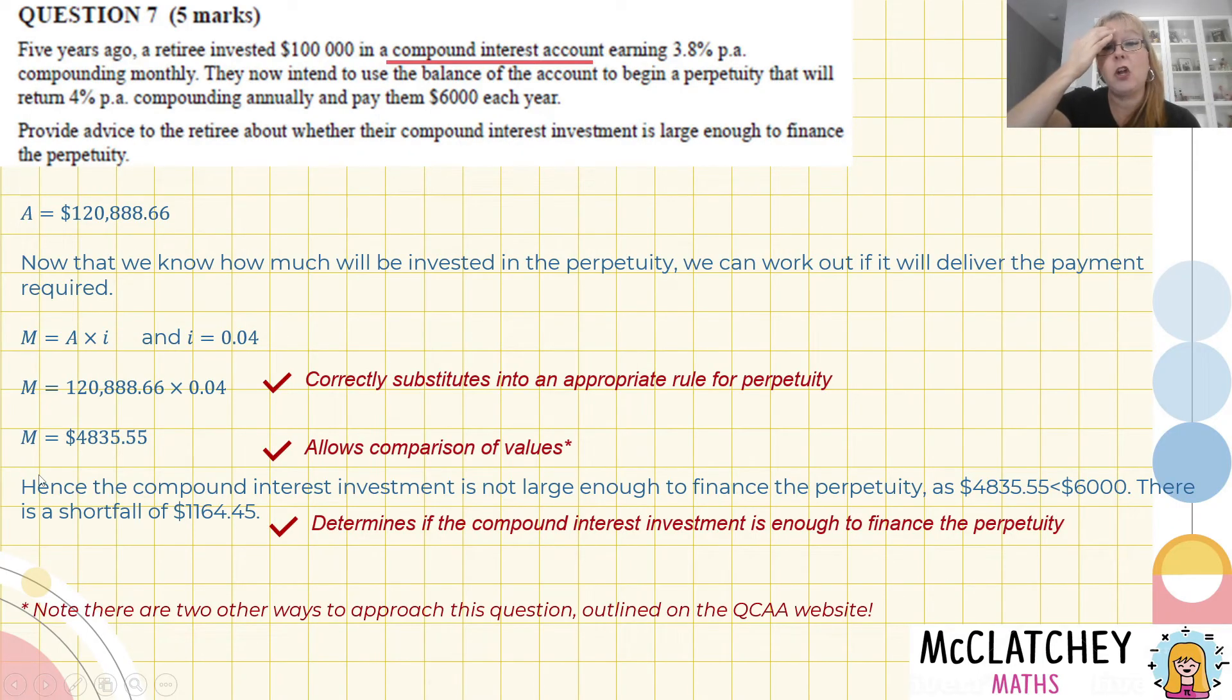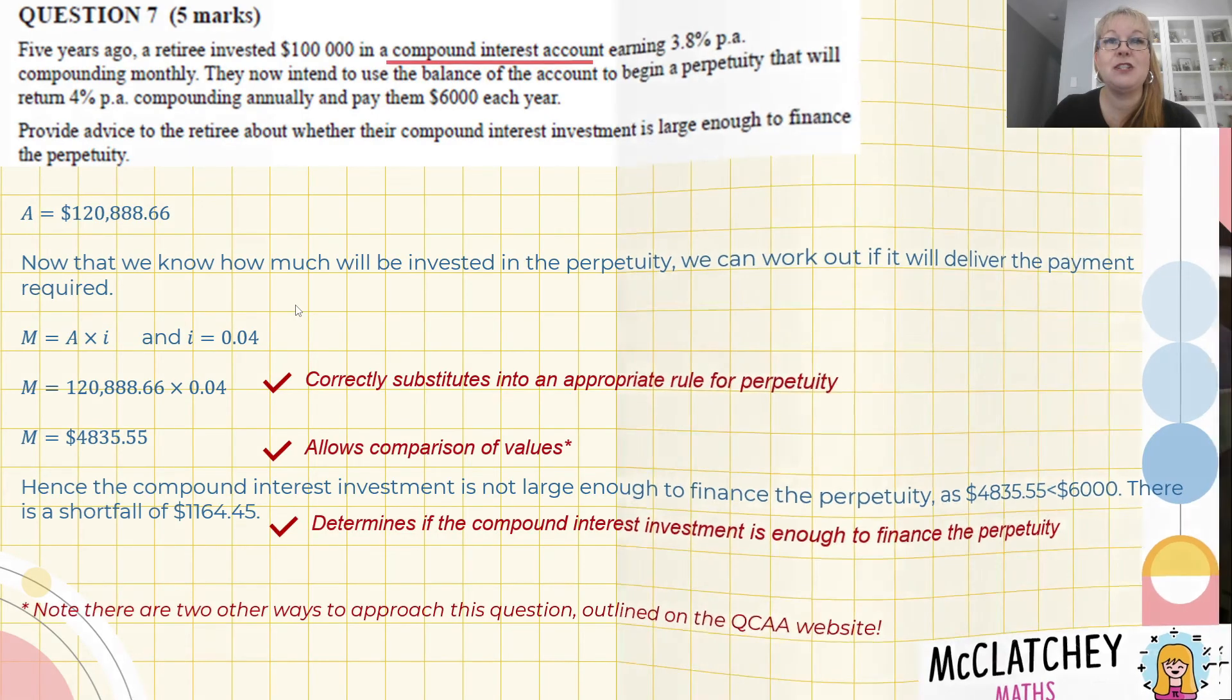Like I said, I could have gone around this a different way. What I could have done is substitute it into this formula. 6000 equals something times by 0.04. I could have rearranged this and worked out the value that I needed to achieve $6,000 and discovered that that was much more than this one here. And if I'd gone with that different method, I would have still earned the marks had I done it correctly. So just remember, sometimes there's more than one way to solve a problem. Always come at it though with great communication so that you will always make sure that your method is explained to the marker.